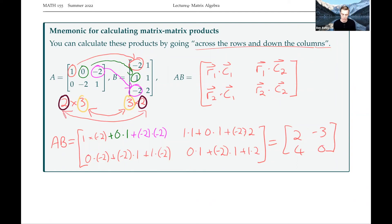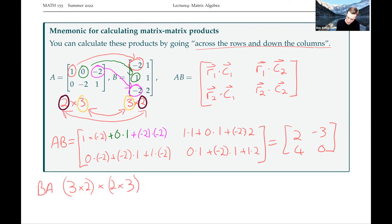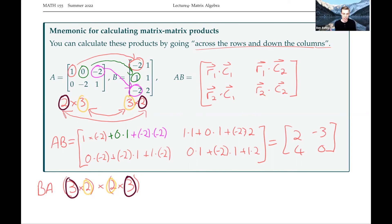Note that if we computed BA instead, B is 3×2 and A is 2×3, which gives inner parts matching (2 and 2), but the output would be a 3×3 matrix — a completely different size from AB. This already tells us that generally AB is not the same as BA, and just because AB is defined doesn't mean BA is necessarily defined either.